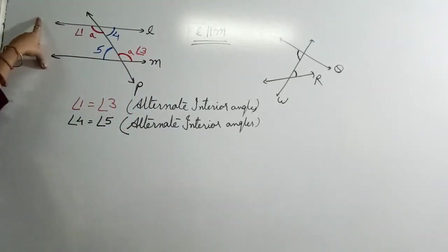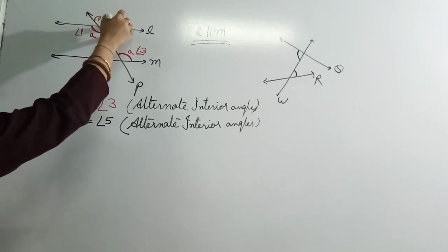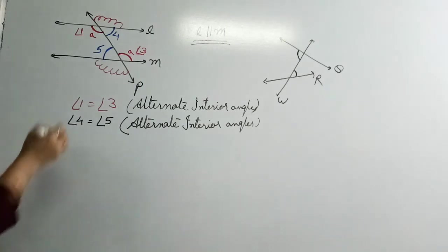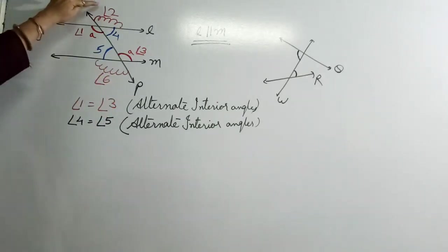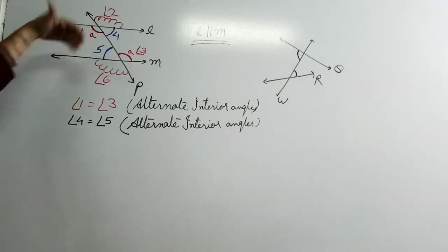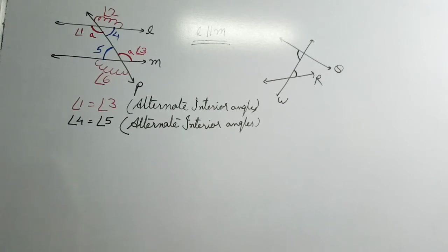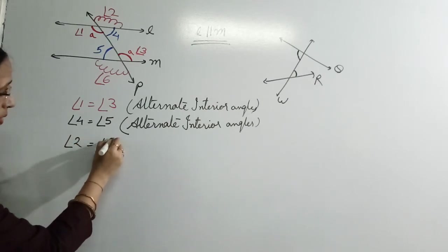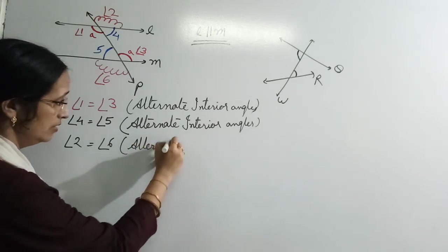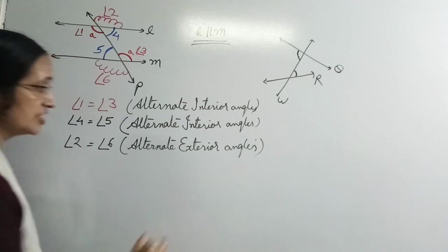तो हमने alternate interior angles के बारे में पढ़ा. Similarly, अगर हम इस figure को ध्यान से देखें, तो यहाँ पे एक और pair of angles बन रहे हैं. I'll name it angle 2 and angle 6. So angle 2 और angle 6 — दोनों parallel lines के बाहर की तरफ हैं, एक इधर और एक उधर, so alternate. We will call this pair alternate exterior angles — angle 2 will be equal to angle 6.